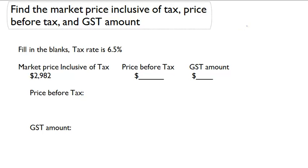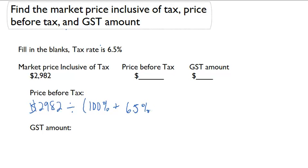Let's start off with the price before tax. The price before tax is simply going to equal: we'll take 29.82 and divide it by 100% plus 6.5%, which is the tax rate given in the problem. This will equal 29.82 divided by 1.065, which will then equal $2,800.